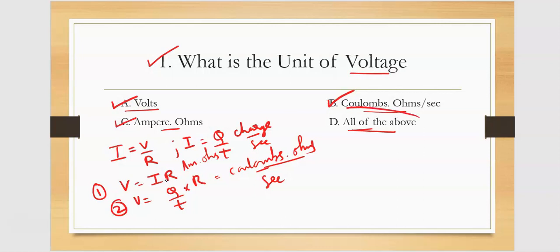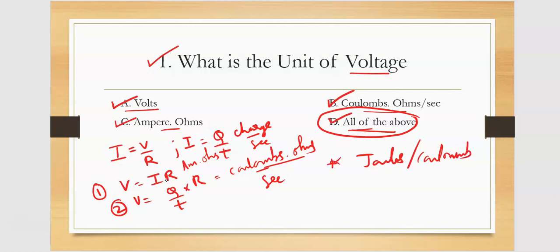All of the above — D is the correct answer for this question. The unit of voltage is also Joules per coulomb and Newton meter per coulomb. So totally five units of voltage: volts, coulombs per second times ohms, ampere ohms, joules by coulombs, Newton meter per coulombs. Next question.